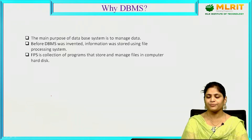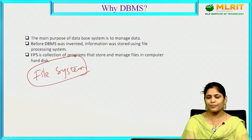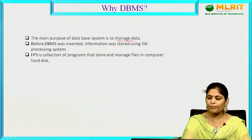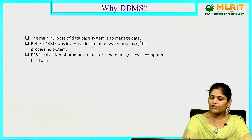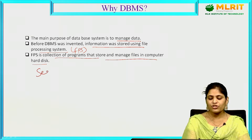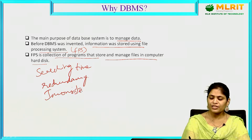Why did DBMS come into existence? In earlier days, before DBMS, we used file systems to store data. The drawback of file systems is that they are used to store only less volumes of data — they are not applicable for managing large volumes of data. Before DBMS was invented, information was stored using a file processing system (FPS), which is a collection of programs that store and manage files on a computer hard disk. With FPS, searching time is more and redundancy is more.